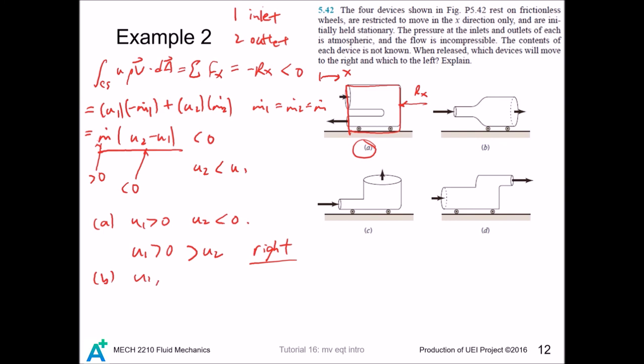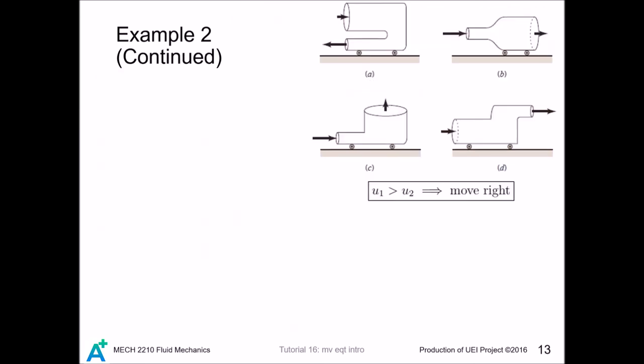For case B, both u1 and u2 are greater than zero, but by continuity equation A1 u1 equals A2 u2. And from the figure A2 is greater than A1, so u1 is greater than u2 and it is going right again. For case D, we have u1 and u2 greater than 0 but u1 equals u2 A2 divided by A1 and this fraction is now smaller than 1, so that u1 is smaller than u2 and finally we have a case that contradicts our assumption so this would go left.